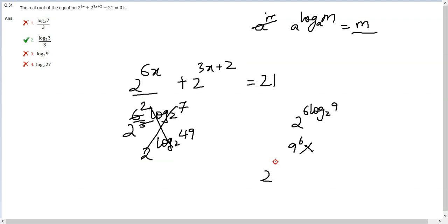Similarly, if you had 2 raised to the power 6 log 27 to the base 2, you would have 27 raised to the power 6, which is much bigger than the answer that we need. So this is wrong, this is wrong, this is wrong.